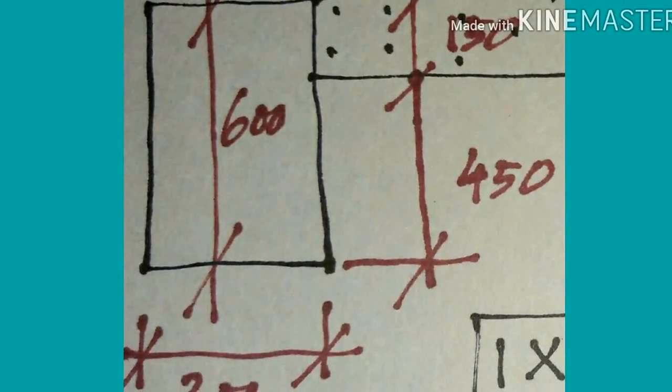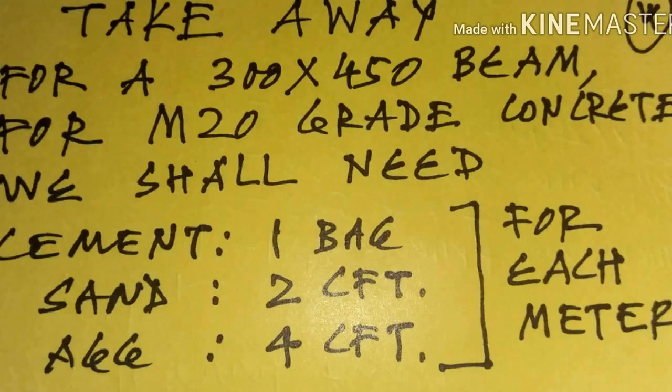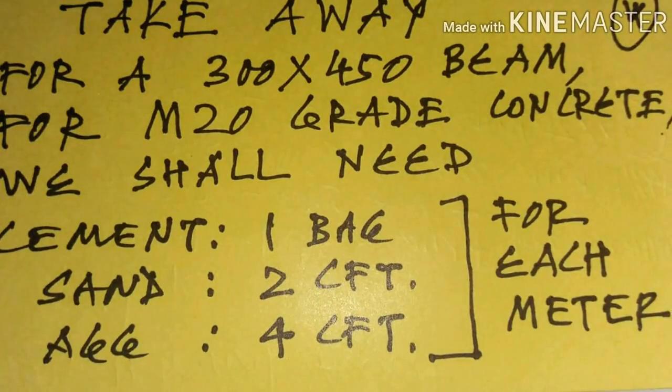Per running meter of the RCC beam, you will require one bag of cement, two cubic feet of sand, and four cubic feet of aggregate. That is one bag of cement, two cubic feet of sand, and four cubic feet of aggregate per running meter of the RCC beam.